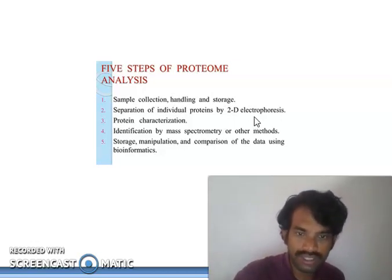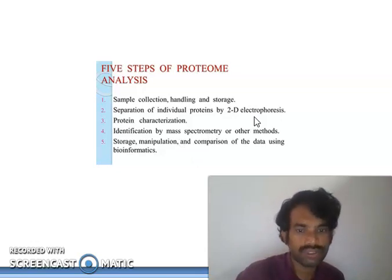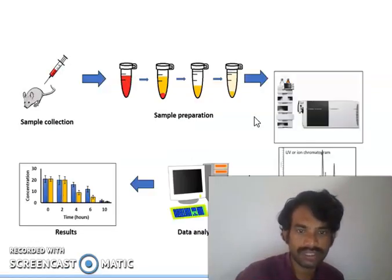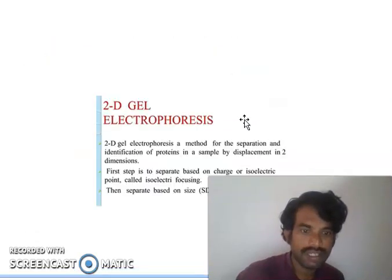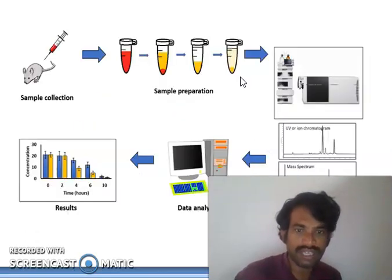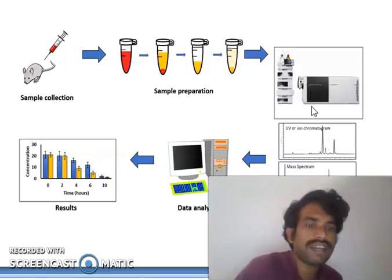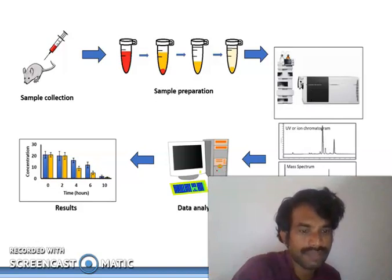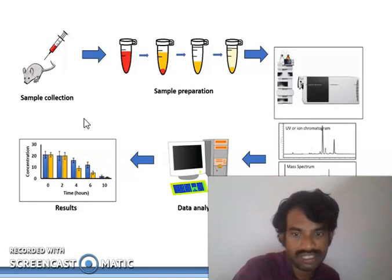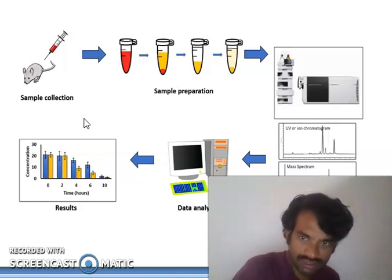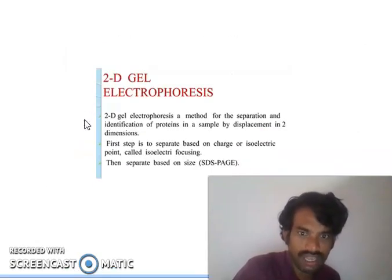The five steps of protein analysis are: sample collection, handling and storage, then 2D electrophoresis and SDS-PAGE methods, then sample preparation, then LC-MS, then mass spectroscopy and UV detection, then mass data analysis and results. The concentration versus time graph shows how it looks. 2D gel electrophoresis is one of the nice techniques for analysis of protein.